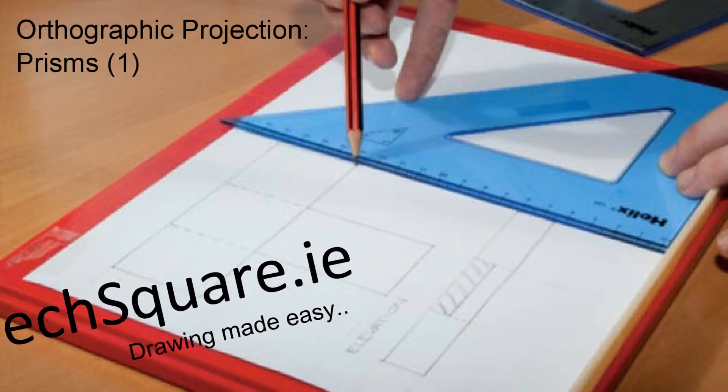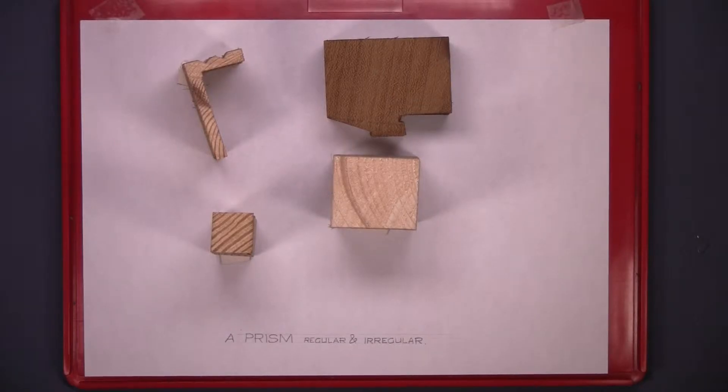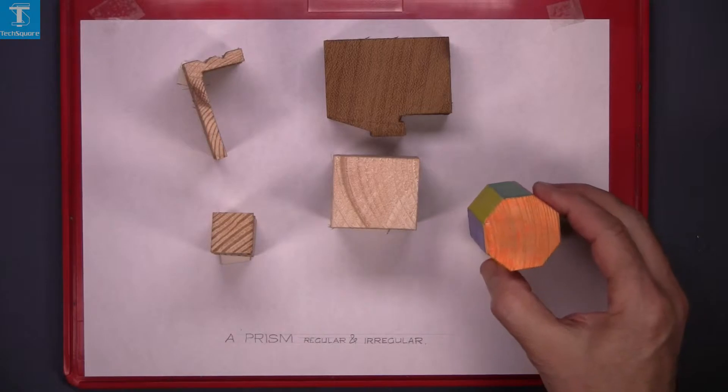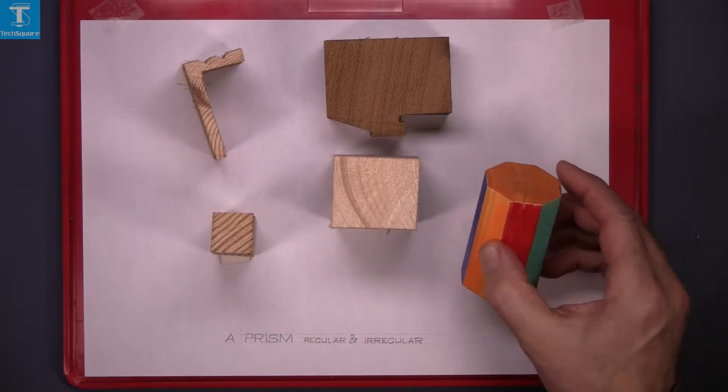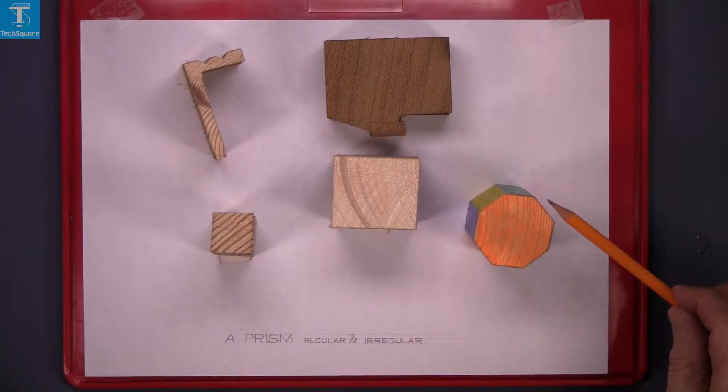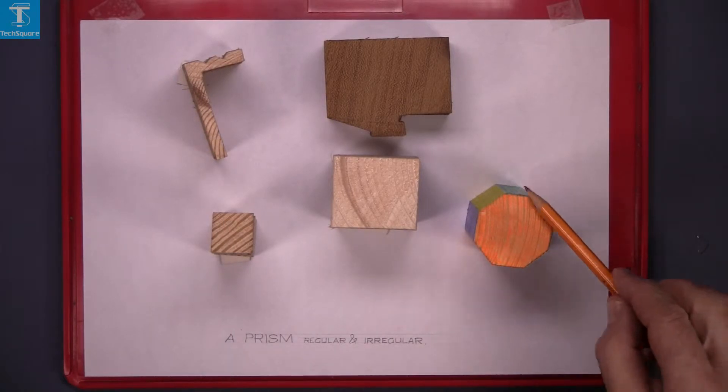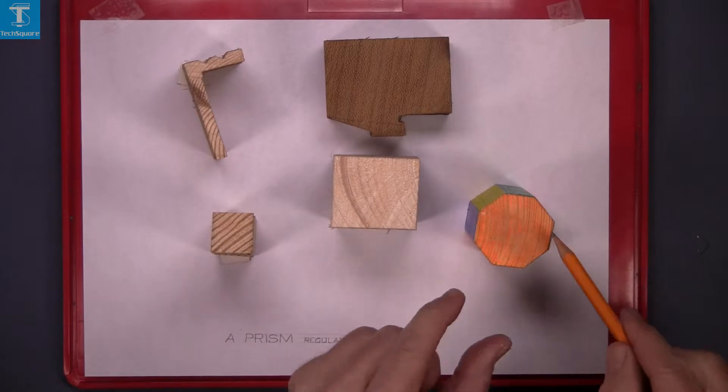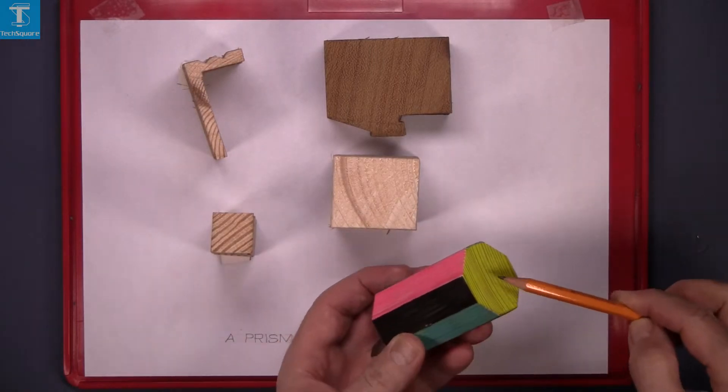Orthographic projection prisms 1. A prism, regular and irregular. A prism is a solid that when you cut a section through it anywhere at 90 degrees to its axis, the shape of the section will be the same shape as that of its base.